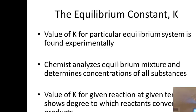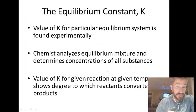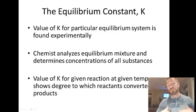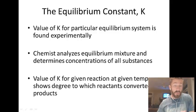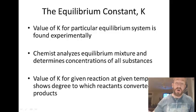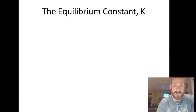The value for K depends on the specific temperature. When you have that K value, it shows the degree to which the reactants are converted to products, or conversely, the degree to which the products are changed back to reactants.